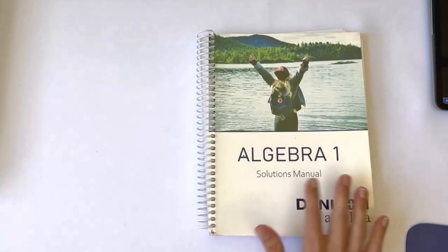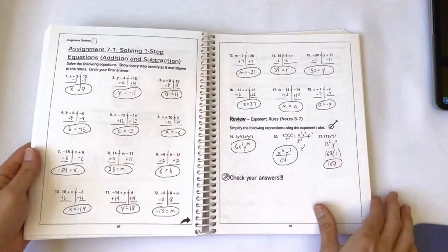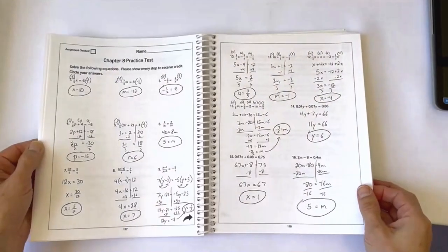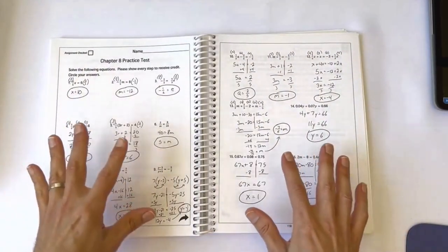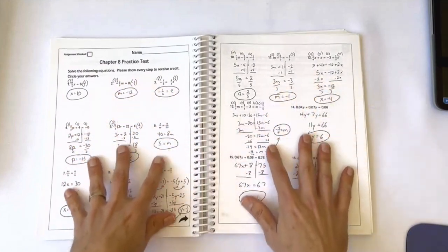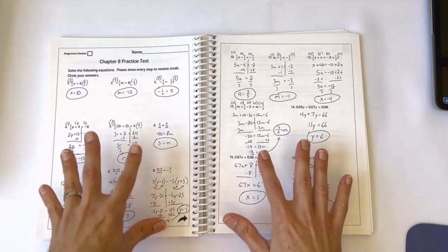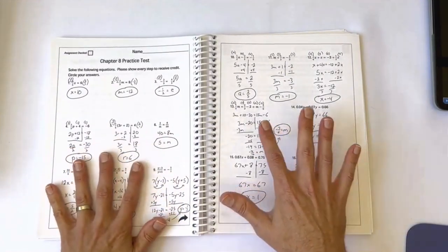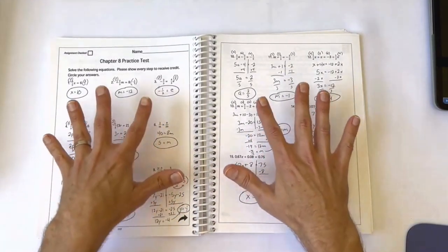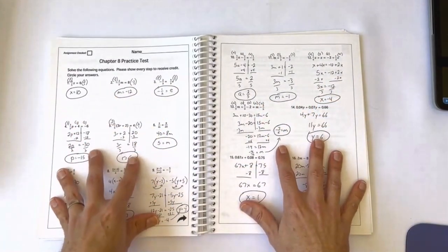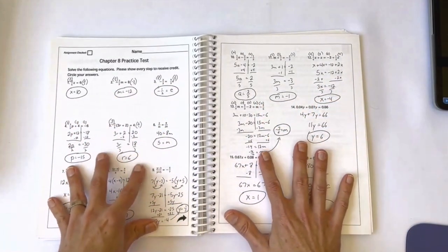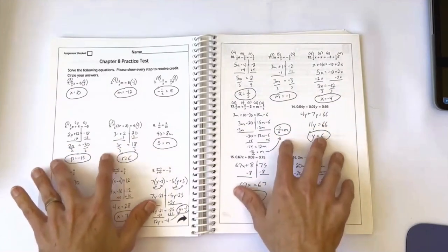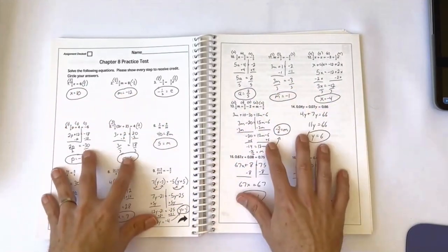The solutions manual shows every single problem worked out in detail, showing every single step, and it is intentionally handwritten so students can see the exact methods used to solve the problems, as well as all the scrap work. I insist that students copy my methods exactly at this level of learning, and they must show all of their work. So I want students to see me showing all of my work, as well as them being able to see every step so they can find any mistakes if they need to in their own work.